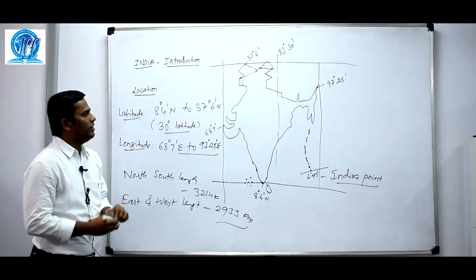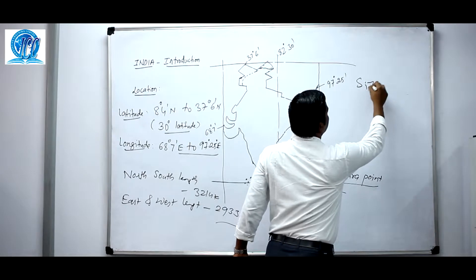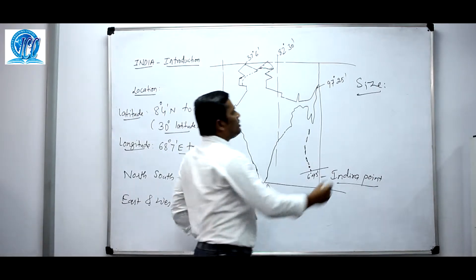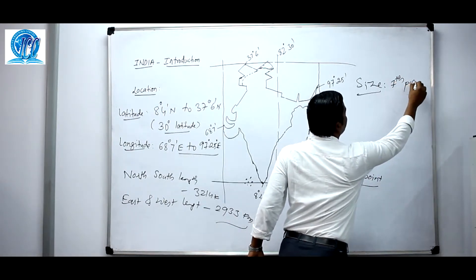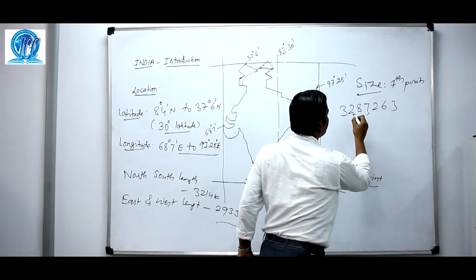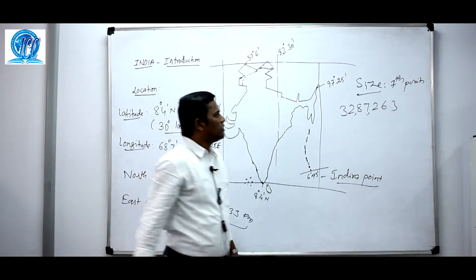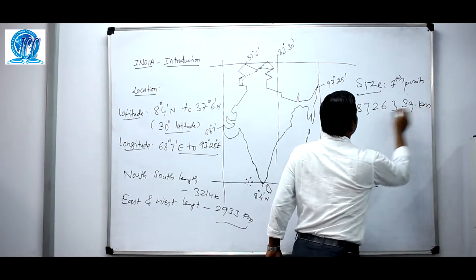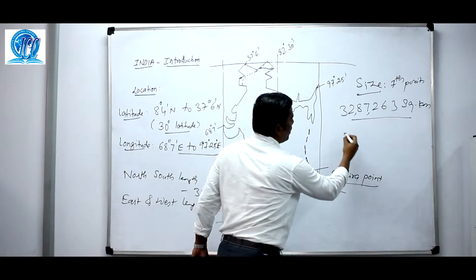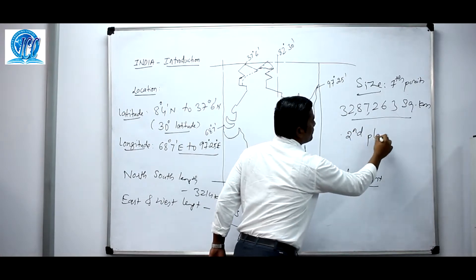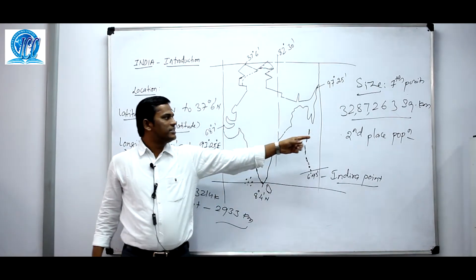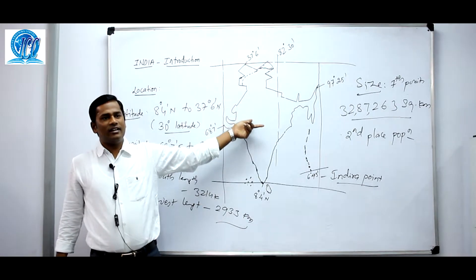Now we are going to study about the size of our country. In terms of area, India ranks 7th in the world. The total area of the country is 3,287,263 square kilometers. We have 2.4 percent of the land area of the earth.